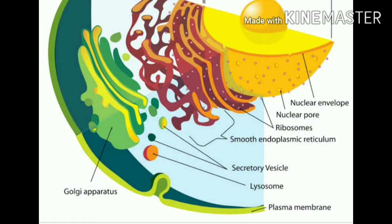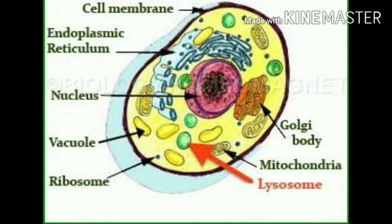How do they help to clean the cell? As any foreign body enters the cell which is not required by the cell, they can digest it with the help of enzymes present in them. These enzymes are very powerful. Apart from this, when a cell becomes very old or the cell organelles are damaged for any reason, they can digest these cell organelles as well as the cell in which they are found, with the help of the digestive enzymes.